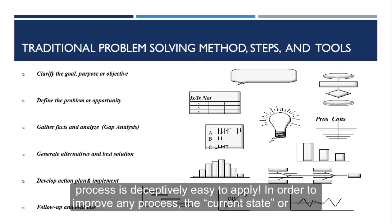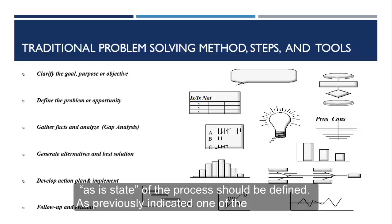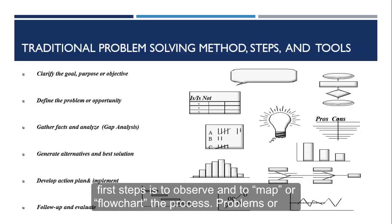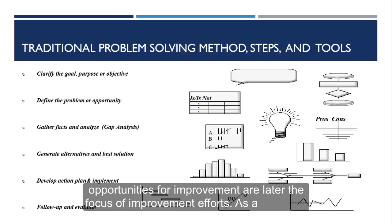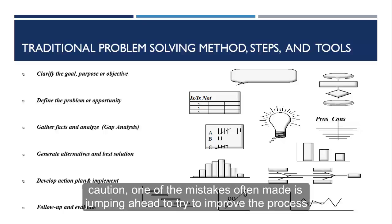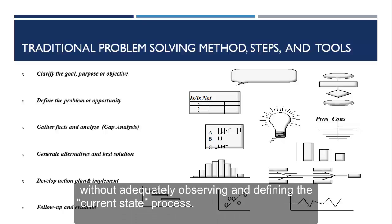In order to improve any process, the current state or as-is state of the process should be defined. As previously indicated, one of the first steps is to observe and to map or flowchart the process. Problems or opportunities for improvement are later the focus of improvement efforts. As a caution, one of the mistakes often made is jumping ahead to try to improve the process without adequately observing and defining the current state process.